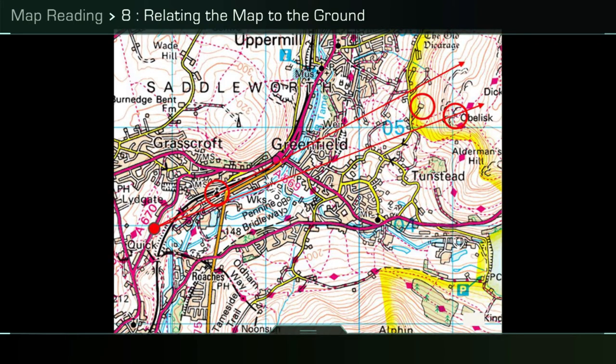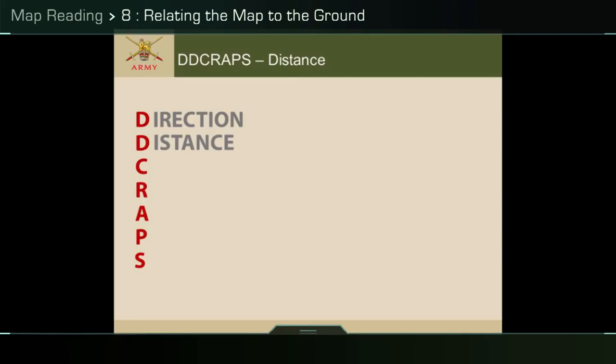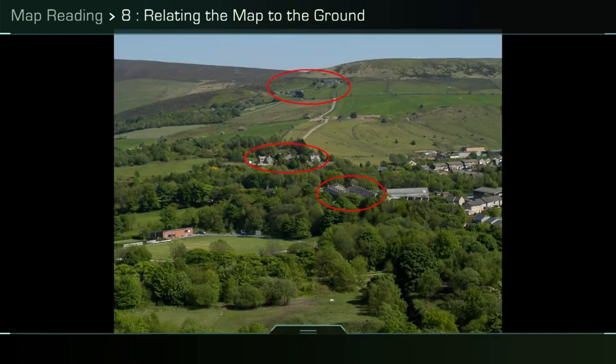Distance: you can identify features or locations by estimating their distance away from you or from known features, using the methods taught to judge distance. Remembering that each grid square relates to one kilometer on the ground can assist you to work out how far away you are from the building featured on top of the ridgeline, circled in red.